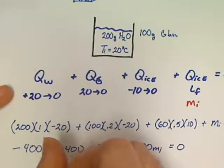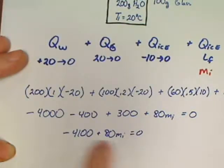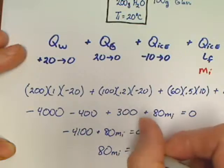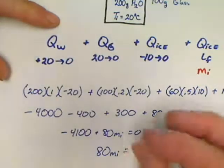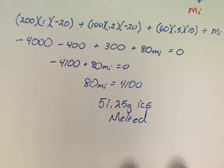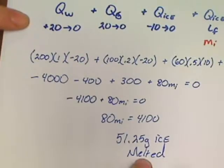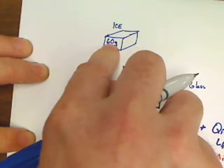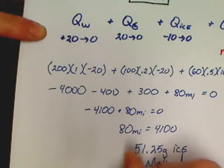So we get: negative 4,000 minus 400 plus 300 plus 80 times mass of ice equals zero, which gives negative 4,100 plus 80 mi equals zero. So 80 mi equals 4,100, meaning mass of ice that melted equals 4,100 divided by 80, which is 51.25 grams. Books often ask how much ice is left — if you started with 60 grams, that means 8.75 grams of ice remains.